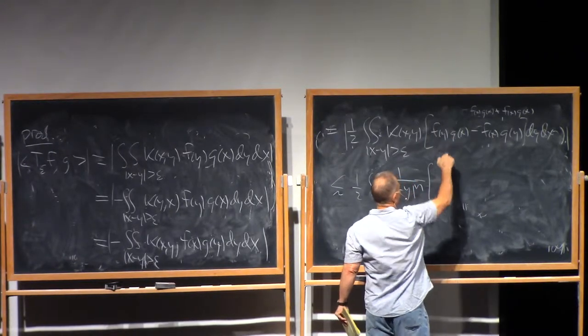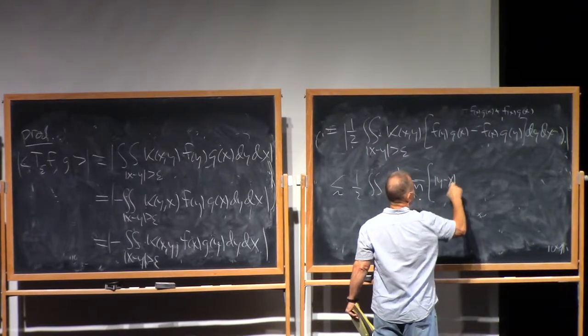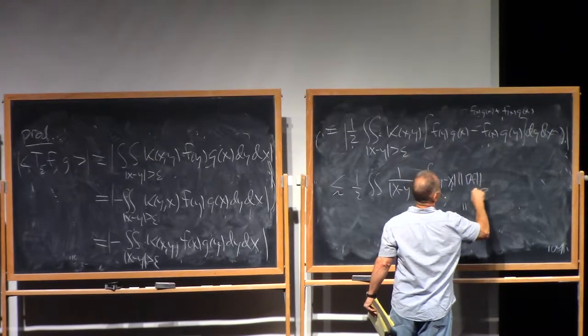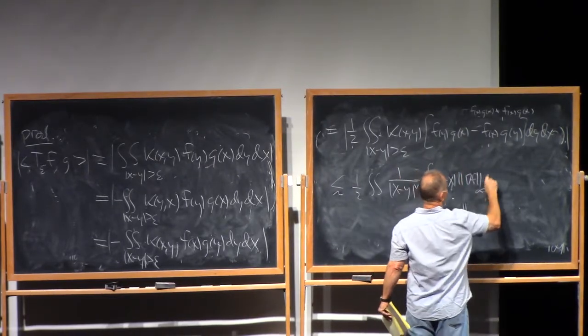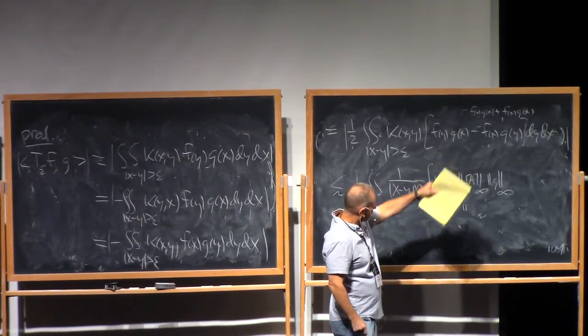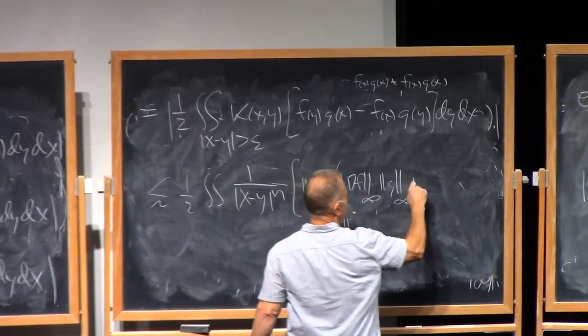This first pairing, I pick up y minus x times the L-infinity norm of grad f times the L-infinity norm of g. And then from this second pair, I pick up the same thing, but with the roles of f and g interchanged.